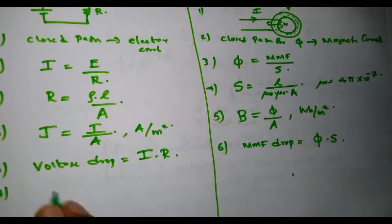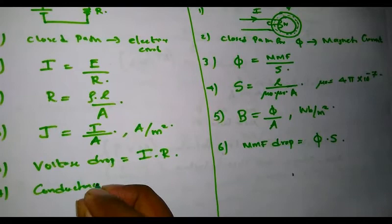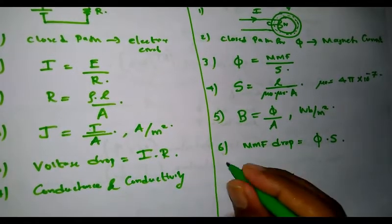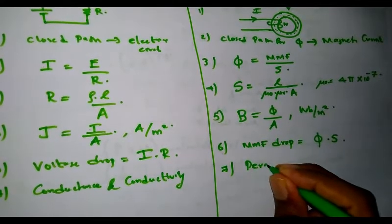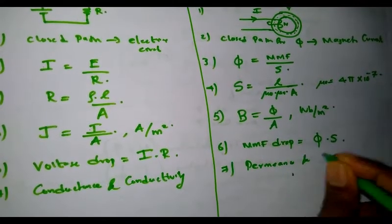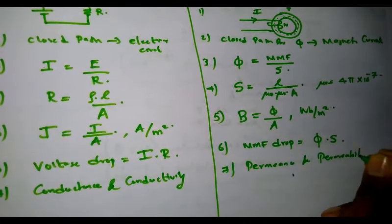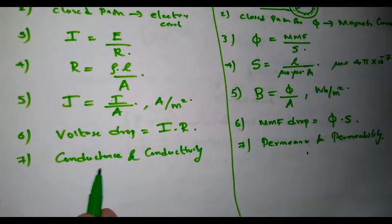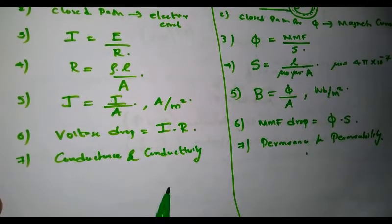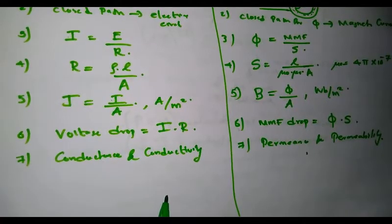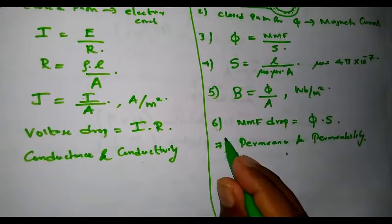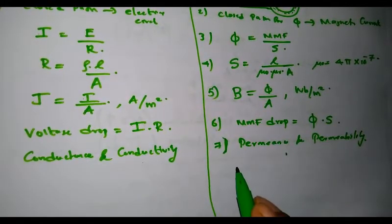In an electric circuit, the analogous terms are conductance and conductivity, which represent the property of a material to allow the flow of electric current. Whereas in a magnetic circuit, we have permeance and permeability, which relate to the ability of a magnetic circuit to allow the setup of magnetic flux across the circuit.